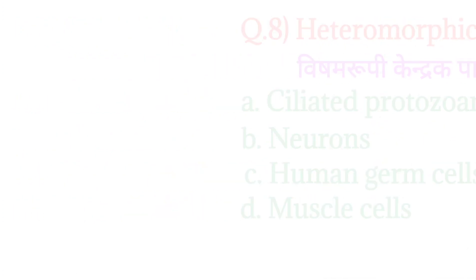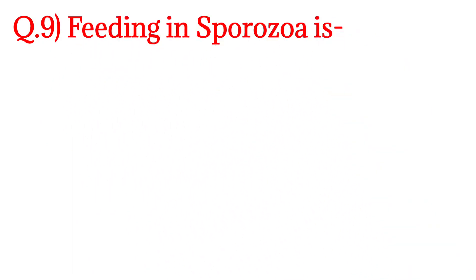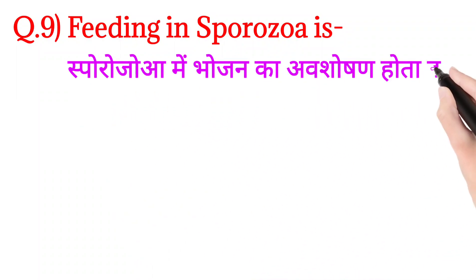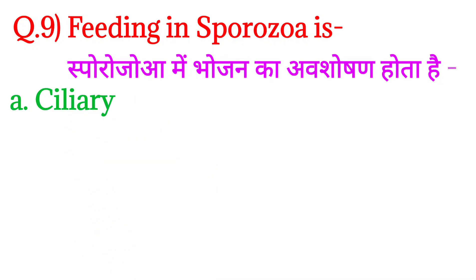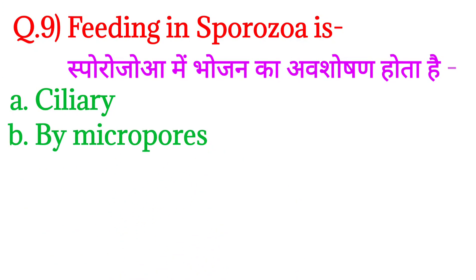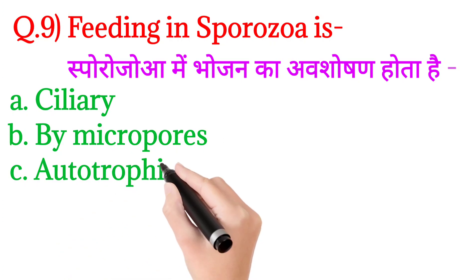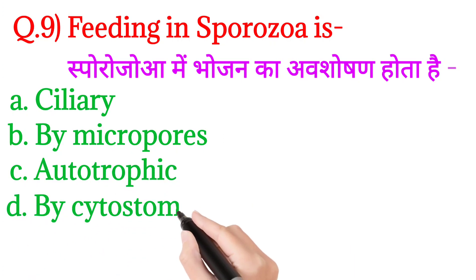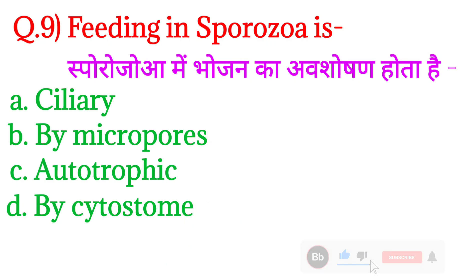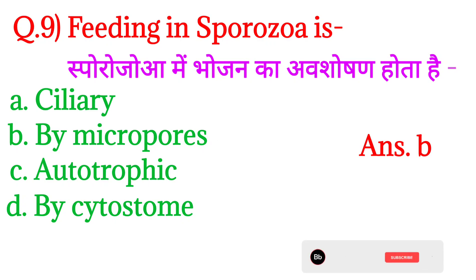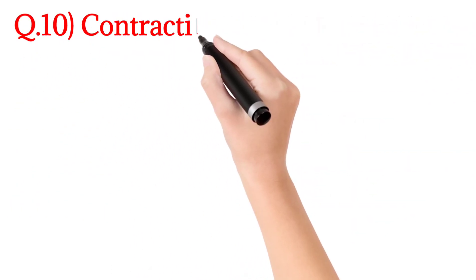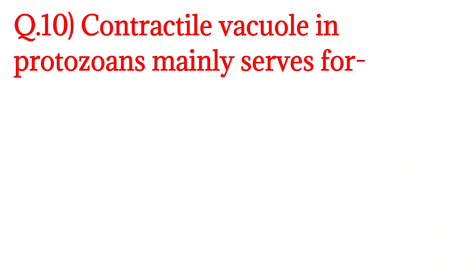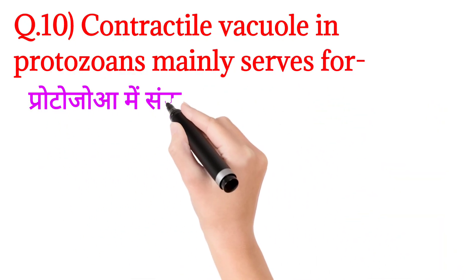Next question, question number 9 — feeding in Sporozoa is — Sporozoa mein bhojan ka absorption kaise hota hai? Option A: ciliary, option B: by micropores, option C: autotrophic, and option D: by cytostome. Iska answer hoga option number B: by micropores.